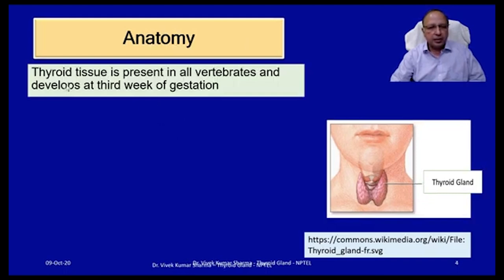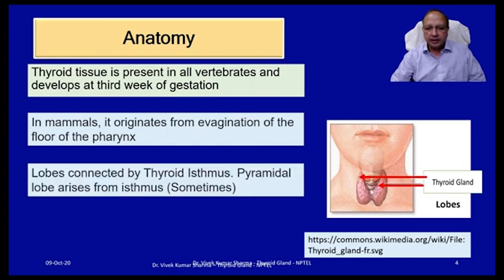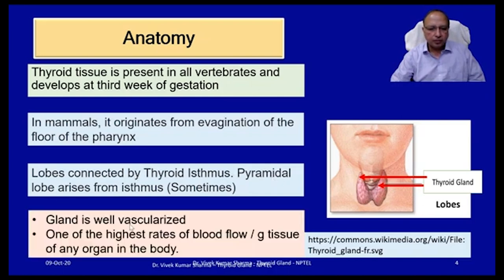Physiologic anatomy. Thyroid tissue is present in all vertebrates and develops at the third week of gestation. In mammals, it originates from the evagination of the floor of the pharynx. The lobes are connected by the thyroid isthmus, and sometimes from this isthmus there is origin of another lobe — the pyramidal lobe. The thyroid gland is one of the most well-vascularized glands in the body, with one of the highest rates of blood flow per gram of tissue.